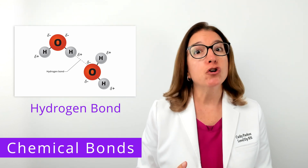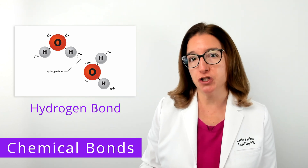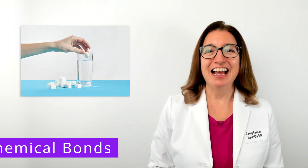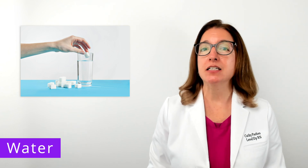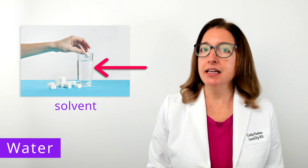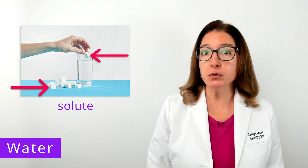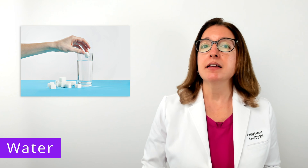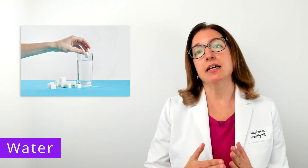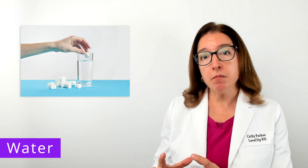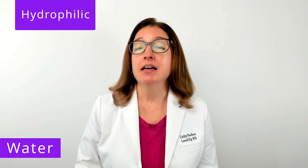With a hydrogen bond, no electrons are lost, gained, or shared. The most common example of a hydrogen bond is the bond that forms between two water molecules. Let's talk a bit more about water and some important terms related to water. A solvent is a substance that is capable of dissolving another substance, and water is an excellent solvent. A solute is the substance that is being dissolved. So when a solute, such as sugar, is placed in a solvent such as water, the polar sugar molecules interact with the polar water molecules via hydrogen bonding. We would describe a molecule such as sugar to be hydrophilic, because it can form hydrogen bonds with water and be dissolved in water.